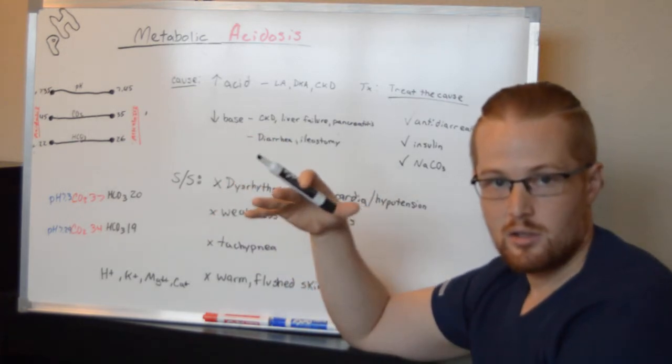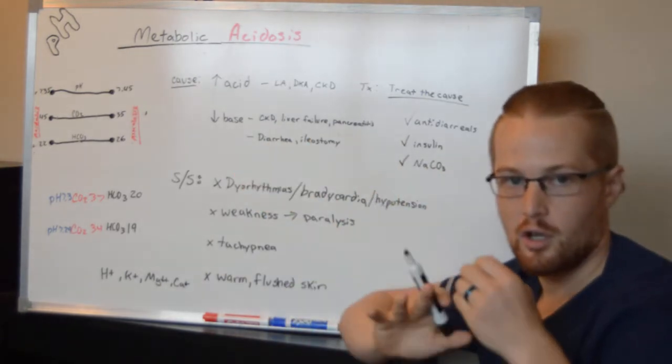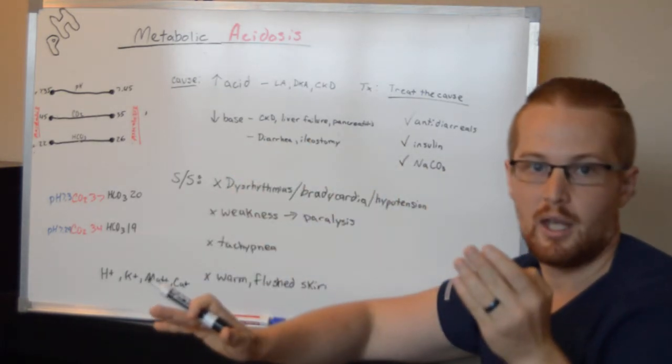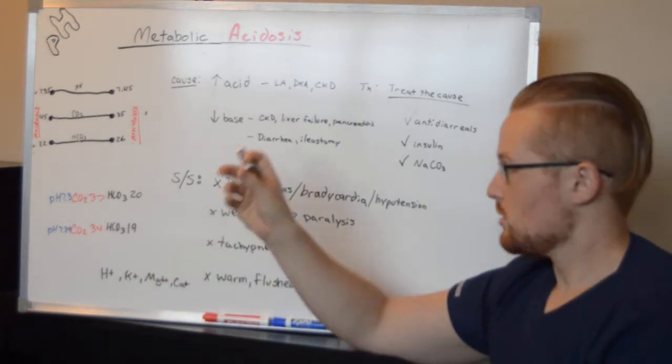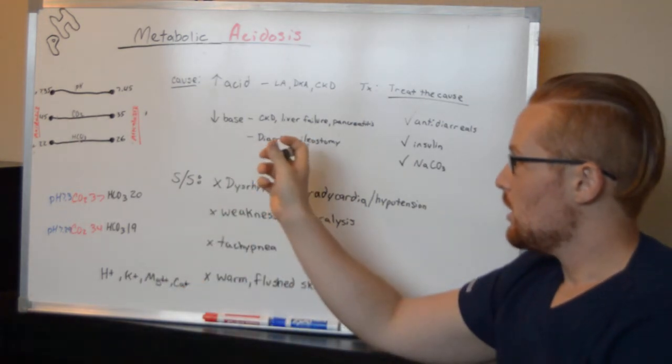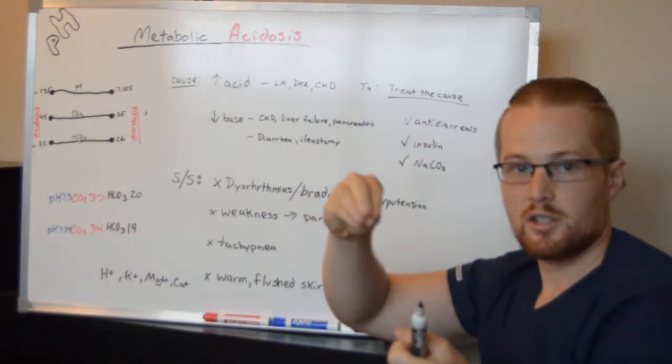Another option is losing the base, excreting too much. A lot of base is found in the intestines. If you have diarrhea, you're losing your bicarbonate. You don't have enough and you're going to have more acids than bases.